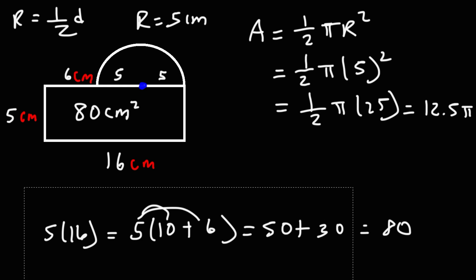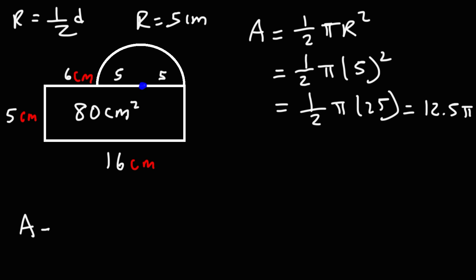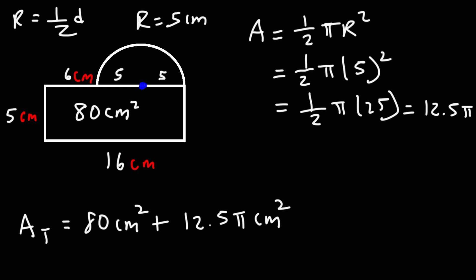So now we can find the total area of the entire figure. It's going to be the area of the rectangle, which is 80 square centimeters, plus the area of the semicircle, which is 12.5 pi square centimeters. We can leave our answer as the exact value, or we can get a rounded decimal answer. Replacing pi with 3.14159, we get approximately 119.3 square centimeters.